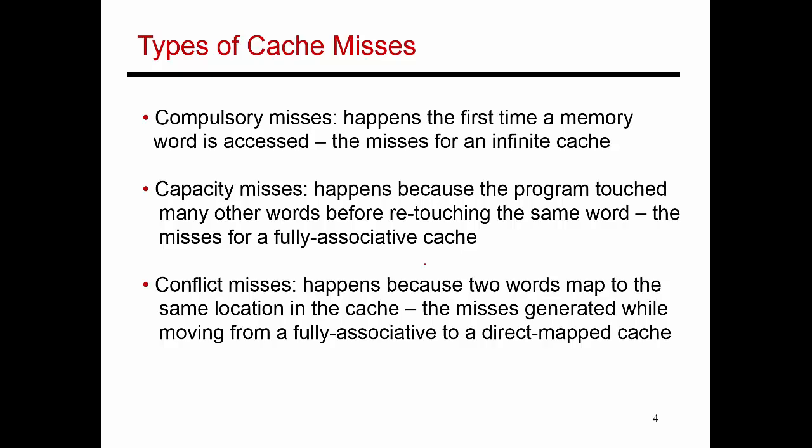Let's talk about the different kinds of cache misses. We're organizing cache misses into three different categories, referred to as the three Cs: compulsory, capacity, and conflict misses. The main reason we're doing this is because as a programmer, I want to understand what is causing my cache misses, so I can redesign my cache, restructure my application, or choose a next-generation processor with a cache hierarchy that minimizes cache misses.